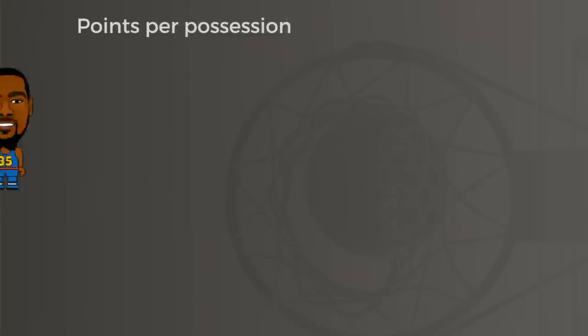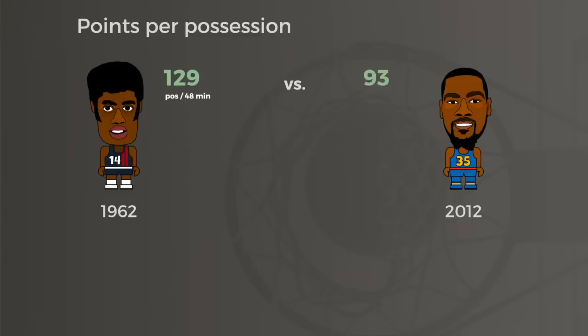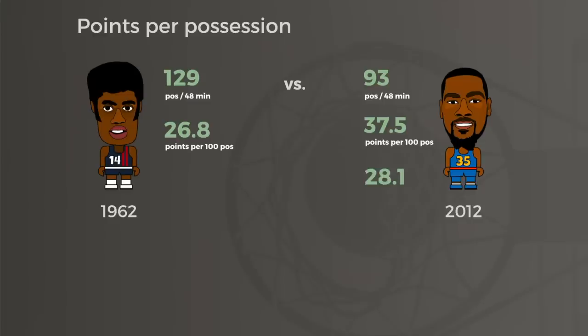In the case of Durant and Oscar, Oscar's Royals played an incredible 129 possessions per game to Oklahoma City's 93. If we estimate the number of possessions they took to score their points, Durant averaged 37.5 per 100 and Oscar 26.8. We can now clearly see Durant scored way more often than Robertson — about 40% more per trip down the court. Since most modern players now play around 75 possessions in a game, we'll sometimes express player stat lines as per 75 possessions so that they're a bit more intuitive.